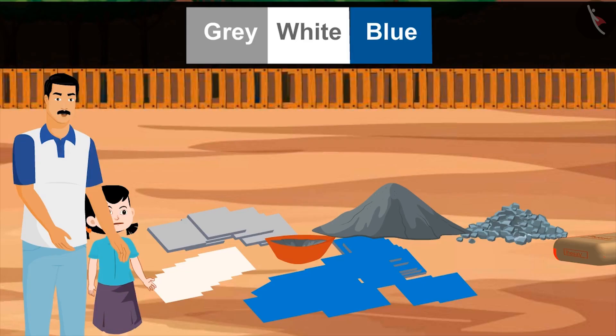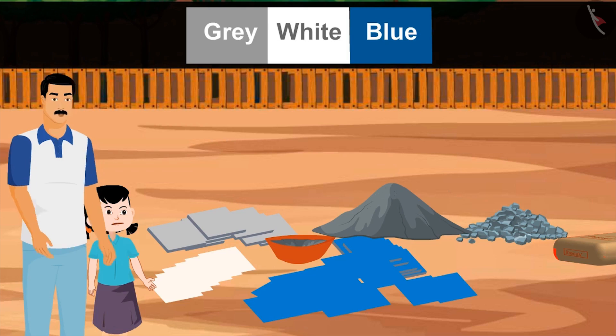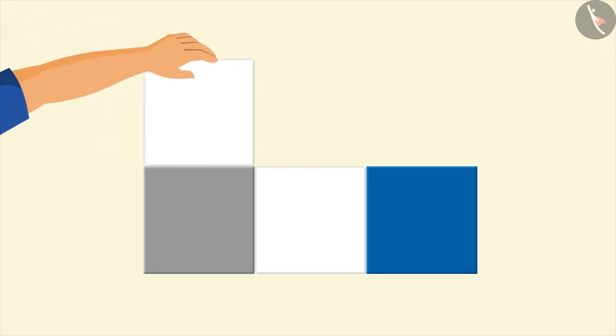And then, after blue, again grey. Using this pattern, the whole floor will be tiled. So here, near the grey tile, we will place the white ones.